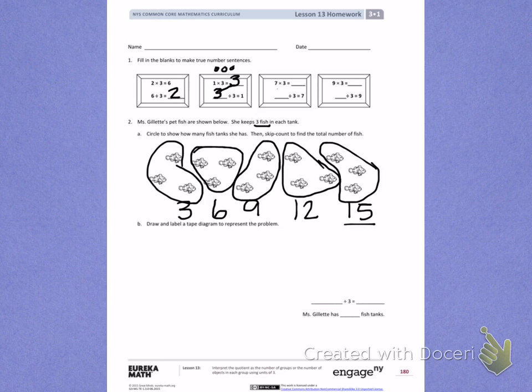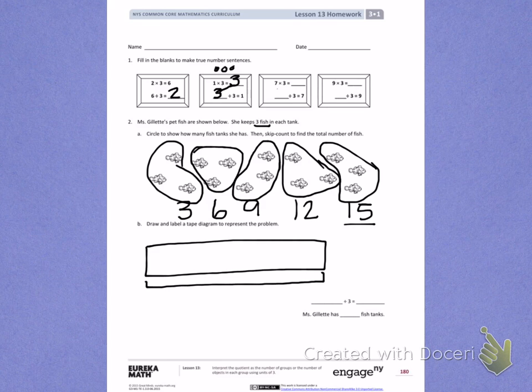Part B. Draw and label a tape diagram to represent the problem. To start my tape diagram, I'm going to draw a large rectangle. This rectangle is going to represent 15 fish. At the bottom, I also have to label how many tanks there are. When I look at the picture above, I see I have 5 groups of fish. So that tells me there are 5 tanks.